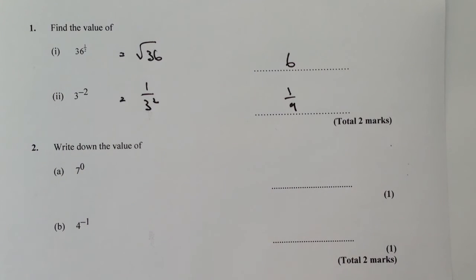Question 2 is, write down the value of 7 to the power of 0. Well any number to the power of 0 has a value of 1. So if it's 243 to the power of 0, it's still 1.